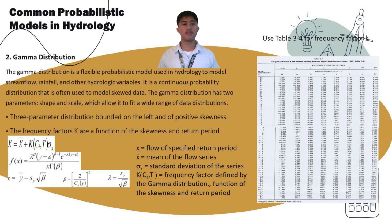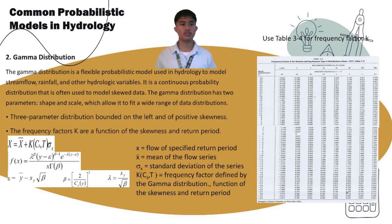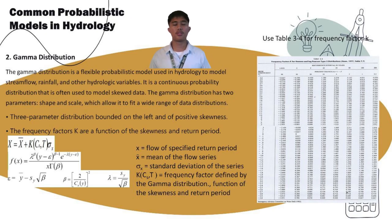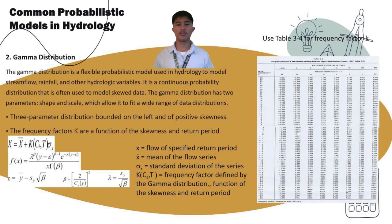The gamma distribution is a flexible probabilistic model used in hydrology to model streamflow, rainfall, and other hydrologic variables. It is a continuous probability distribution often used to model skewed data, with two parameters — shape and scale — allowing it to fit a wide range of data distributions. The formula uses x (flow for specified return period), x-bar (mean), sigma-sub-x (standard deviation), and k(C,T) as the frequency factor defined by the gamma distribution as a function of skewness and return period.